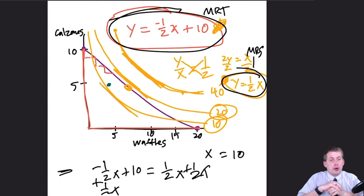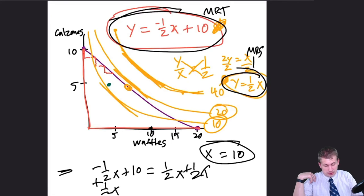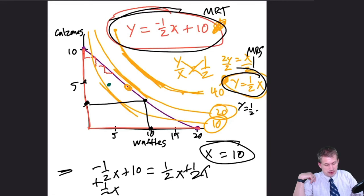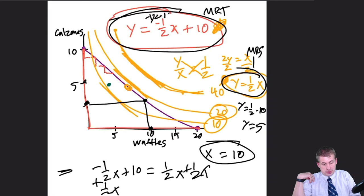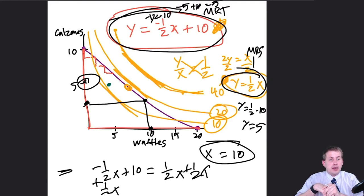Consuming 10 waffles maximizes happiness given our budget. To find the number of calzones, we plug x equals 10 into either equation. Using y equals one half x gives y equals one half times 10, so y equals five. Or using the budget line: y equals negative one half times 10 plus 10 equals five. Either way, the ideal number of calzones is five. So we need to buy 10 waffles and 5 calzones.